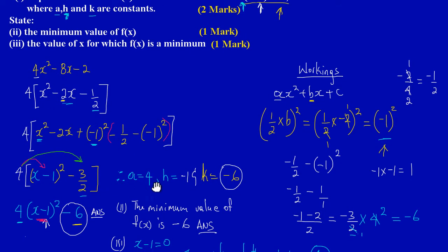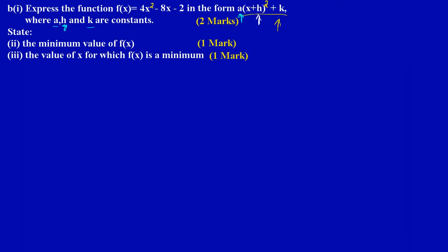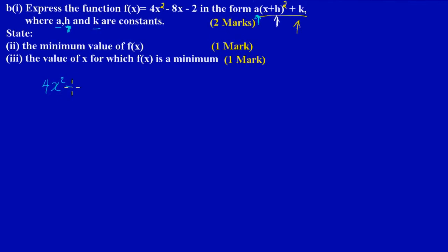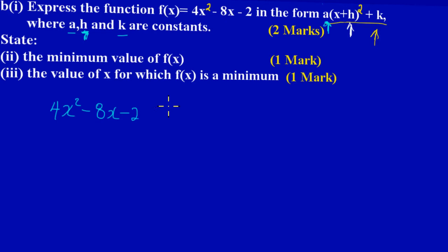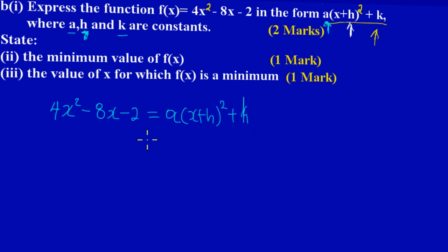They have asked us to write 4x squared minus 8x minus 2 in the form a open bracket x plus h close bracket all squared plus k. By intuition, what this suggests is that we should expand this bracket.